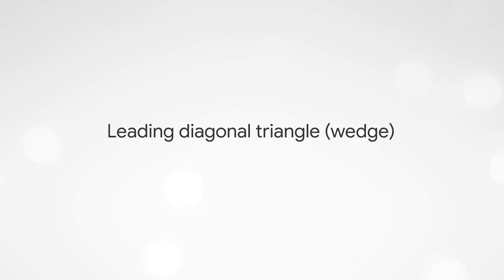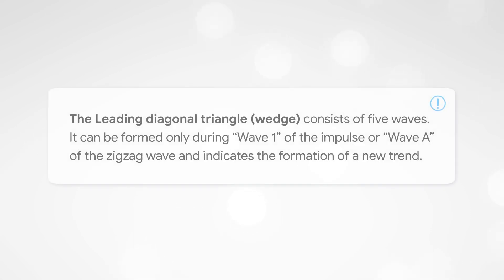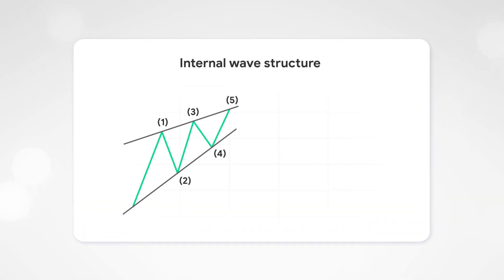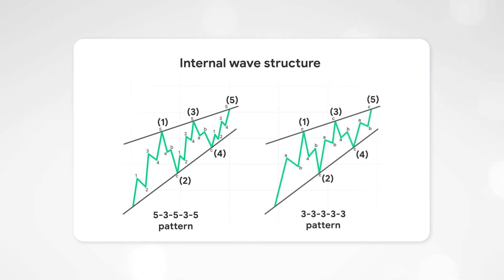Leading Diagonal Triangle — Wedge. The leading diagonal triangle consists of five waves. It can be formed only during wave 1 of the impulse or wave A of the zigzag wave, and indicates the formation of a new trend. The internal wave structure can consist of a 5-3-5-3-5 pattern or include only zigzags.